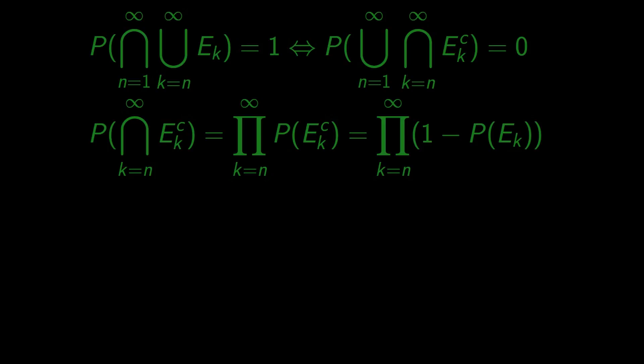Now we can use our inequality that 1 plus x is less than or equal to exponent of x. We substitute for x equal to minus probability of success, which is a number close to zero, so the approximation is going to be quite precise.